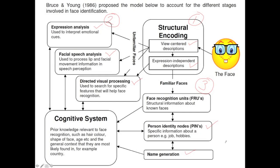Quite often that last bit — that name generation — takes time, and we suffer from what's commonly known as the tip-of-the-tongue syndrome. We say, I know that person, he was in that film, he was married to so and so. You know all this information about this person, but you can't quite get the name out.